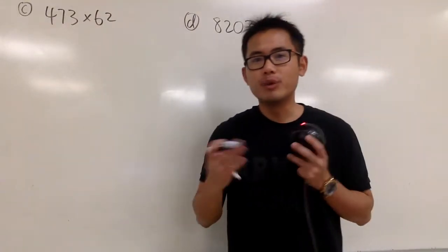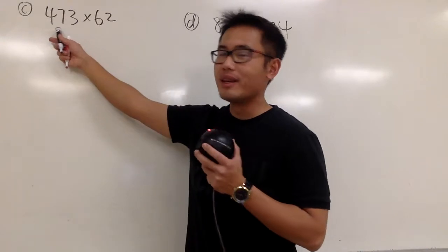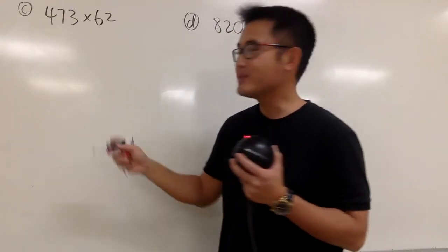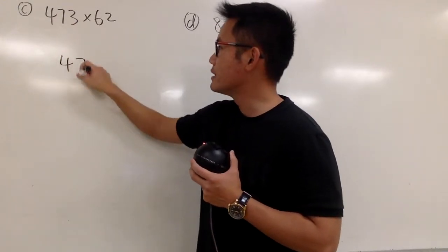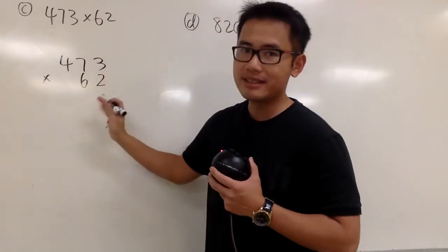Okay, in this video I'll show you guys how to multiply and divide big numbers. So we have the first one, 473 times 62. And to do this, we'll just line up the numbers to the right. We will first write down 473 times 62 like this.